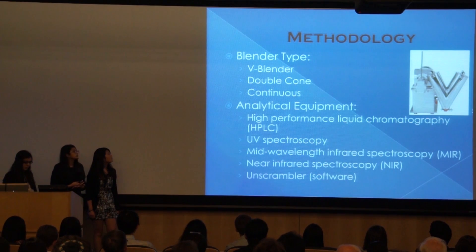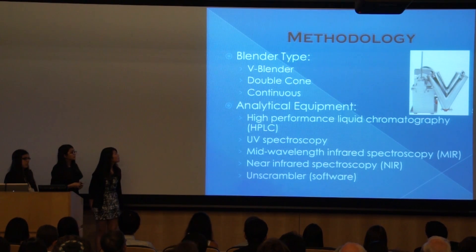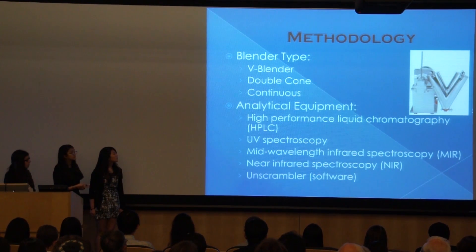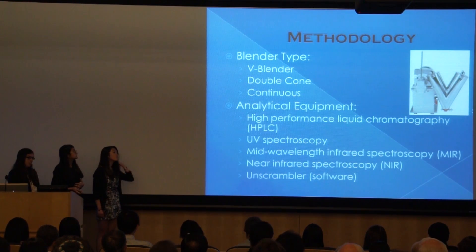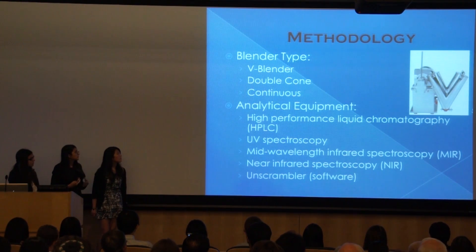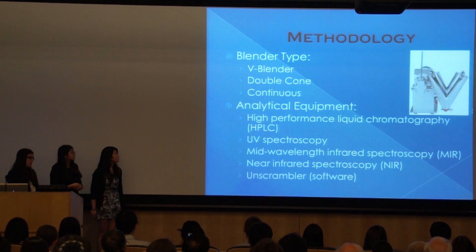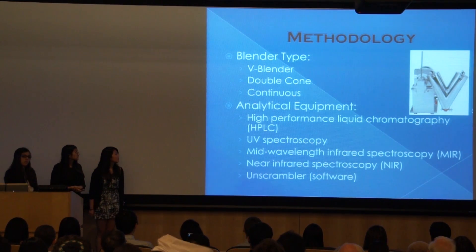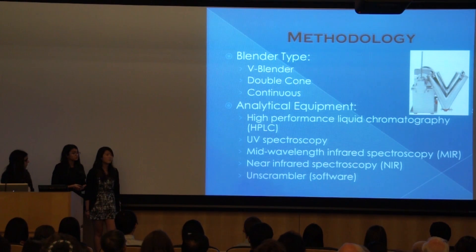Two main methodologies used in this area are blenders and analytical equipment. The three blenders we particularly researched were the V-blender, the double cone, and the continuous blender, although there are numerous different blenders that operate in the industry. We specifically worked with the V and double cone blenders when performing our experiment, but we will also talk about the continuous blender later on. For analytical equipment, we worked with near-infrared spectroscopy and Unscrambler software, though other equipment includes high-performance liquid chromatography, ultraviolet spectroscopy, and mid-infrared spectroscopy.